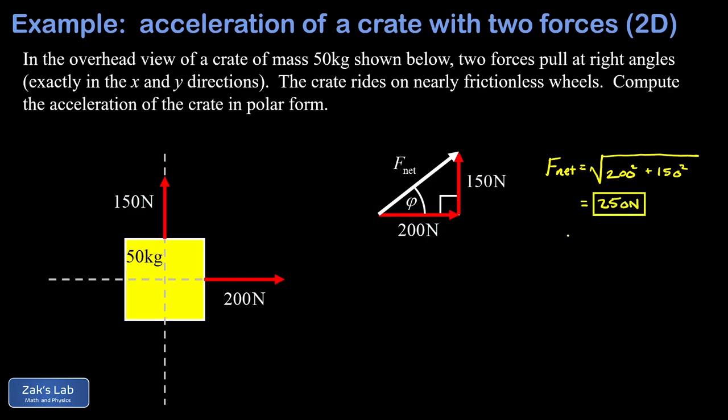Next, we need to find our angle of elevation that we called phi. And the tangent of phi is 150 over 200. In other words, phi is the angle whose tangent, that's inverse tangent, of 150 over 200. And when we run the numbers on this to three significant digits, we find an angle of 36.9 degrees.